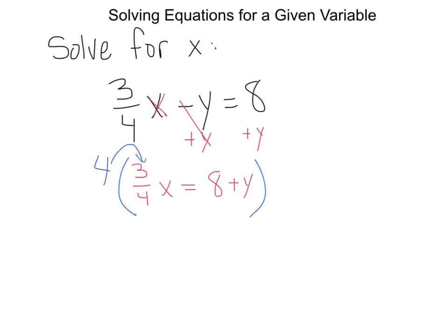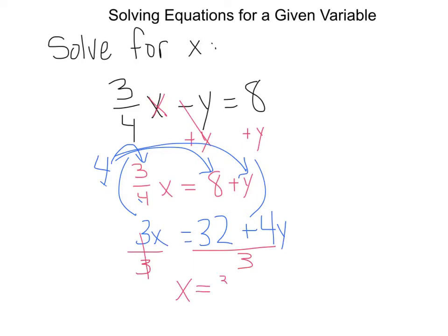And what that does is this becomes 3x, because the 4 and the 4 cancel out. And then I do 4 times 8, which is 32, plus 4 times y, which is 4y. Now I'm working with a whole number coefficient of x. And you guys know to get rid of that, we need to just divide by 3. And so I'll have x equals 32 plus 4y over 3.